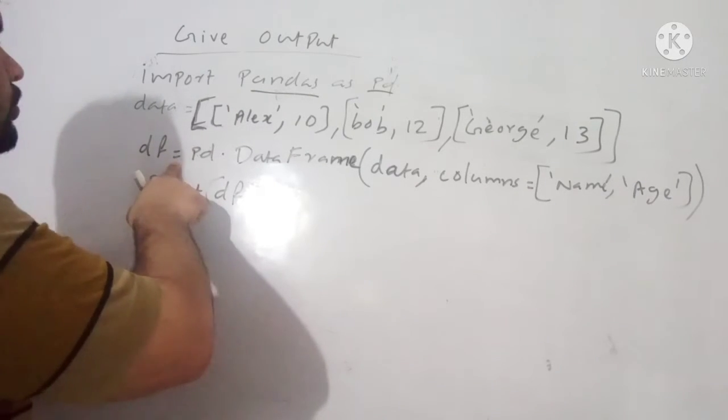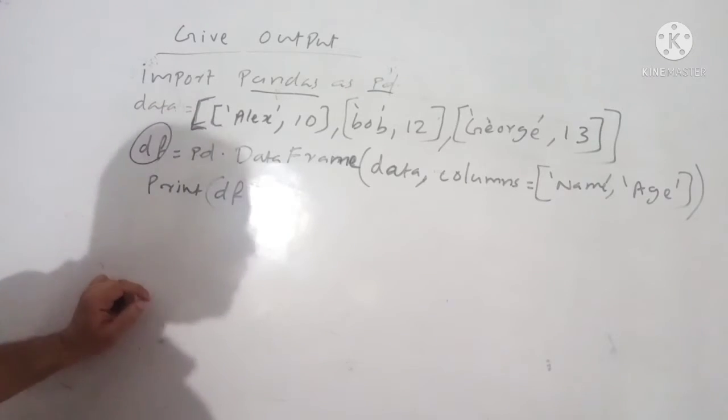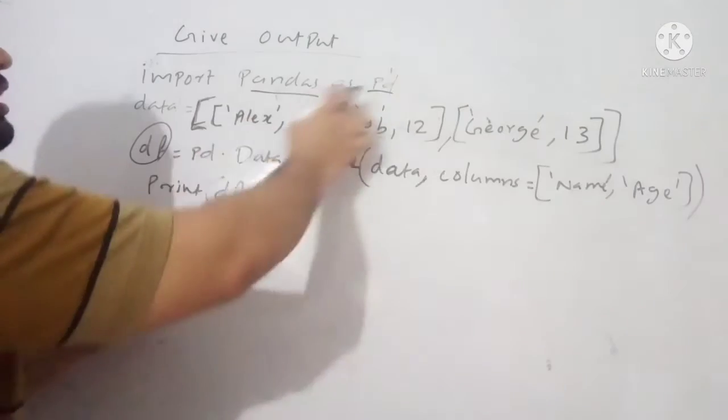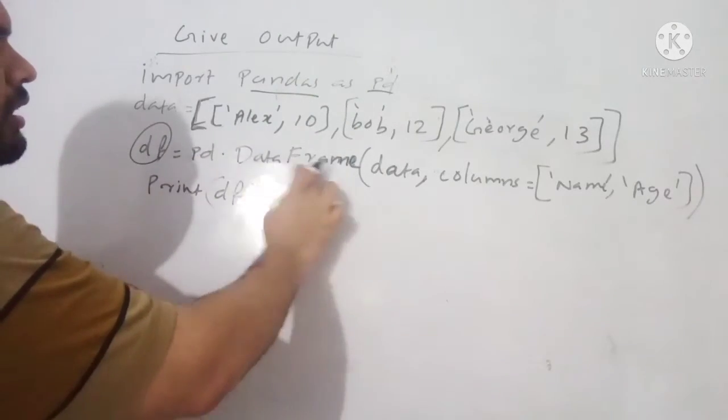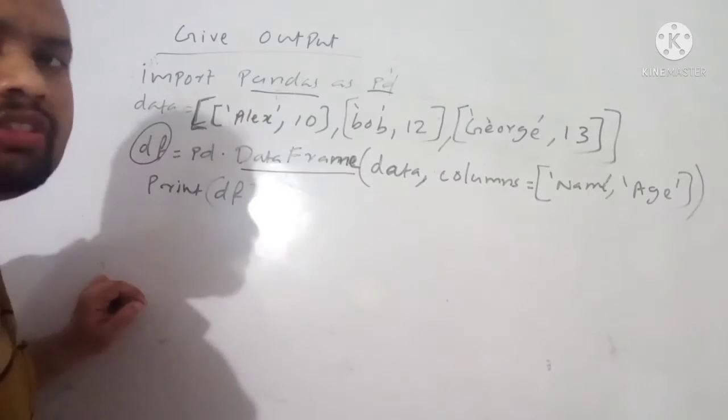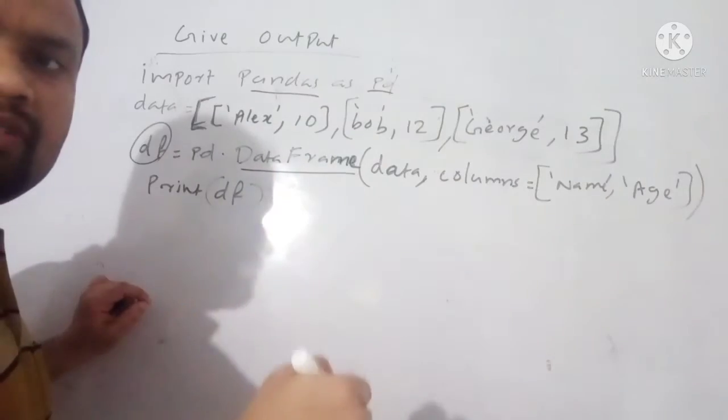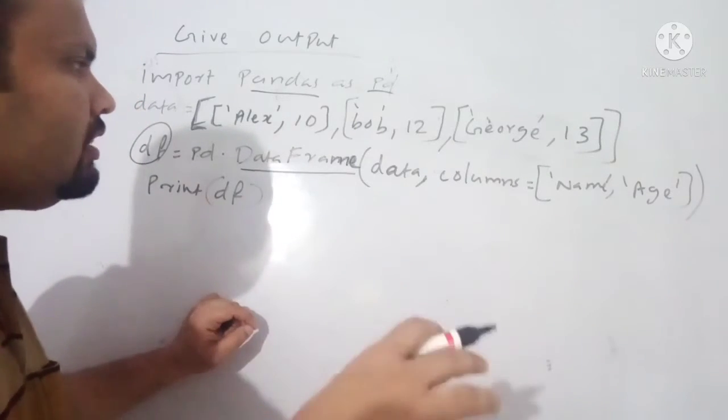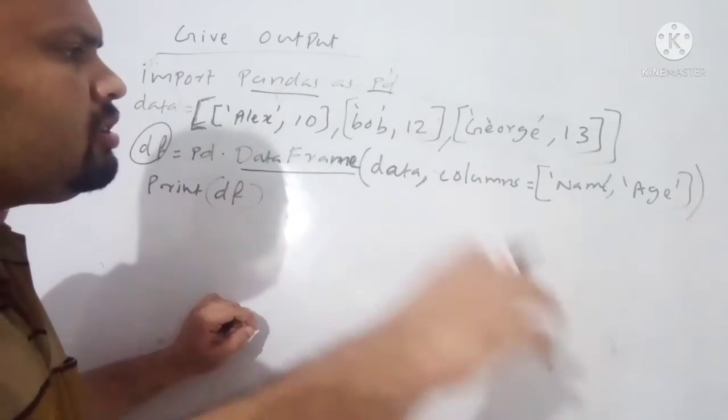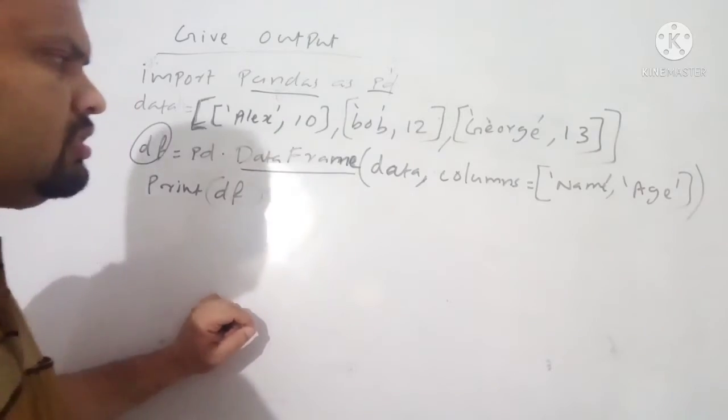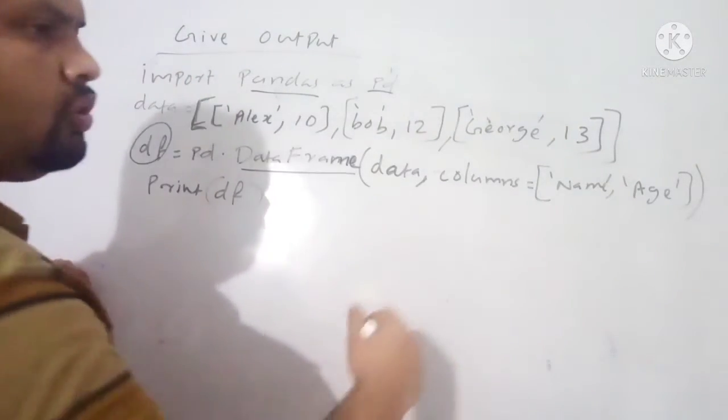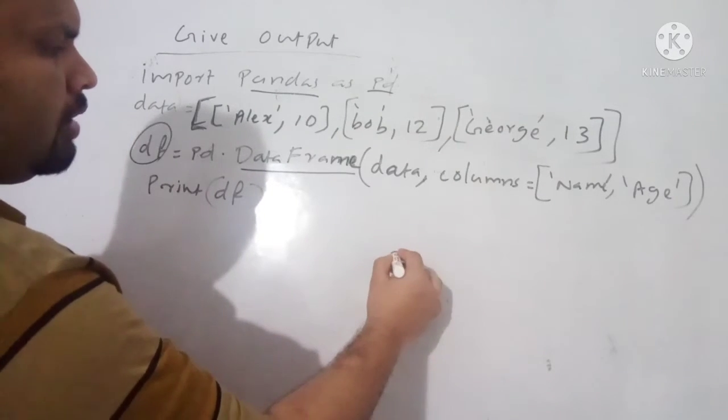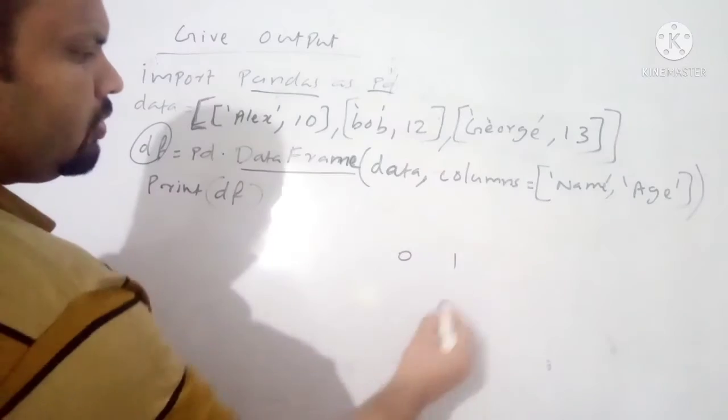df is equal to df is a new variable, is equal to pd.DataFrame. What is pd? pd is an object of python pandas. pd.DataFrame, data frame is a function which is used for creating the data frame. Data frame is a two-dimensional data structure. Datas are stored in the form of rows and columns.